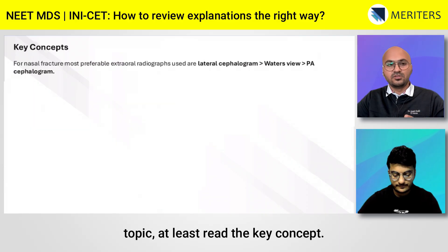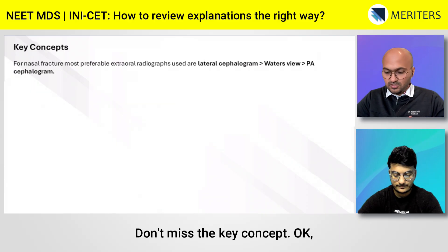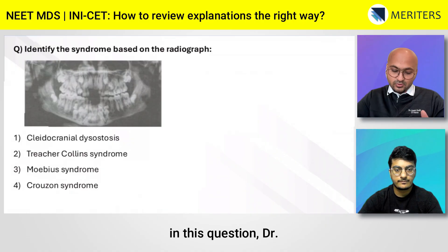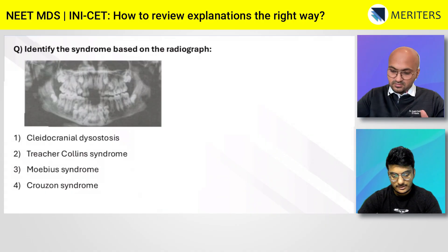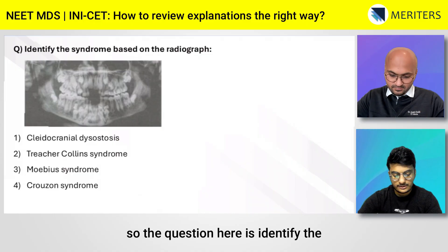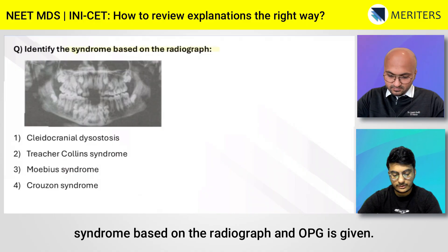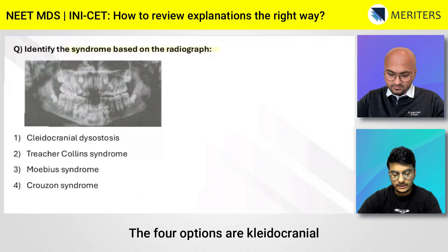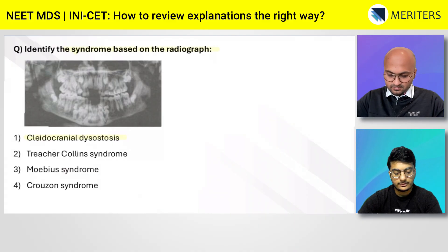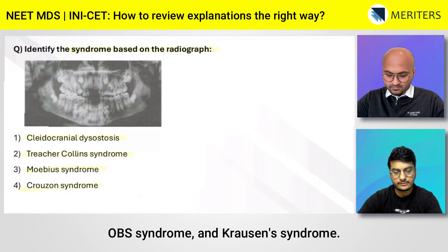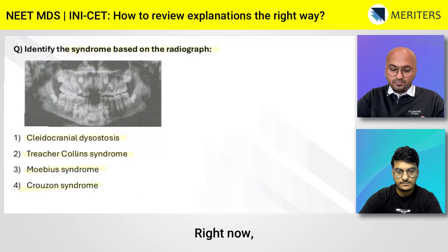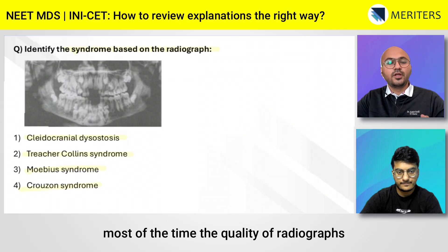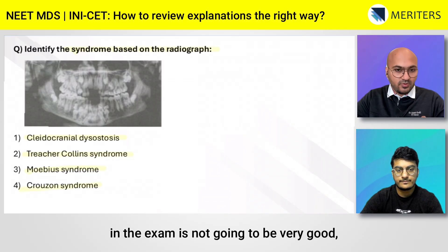Next question: an OPG is given and you are asked to identify the syndrome. The four options are cleidocranial dysostosis, Treacher Collins syndrome, Möbius syndrome, and Crouzon's syndrome. Most of the time the quality of radiographs in the exam is not going to be very good, so you should get used to that as well.